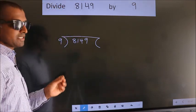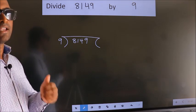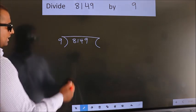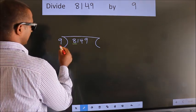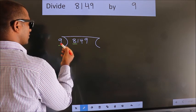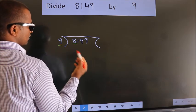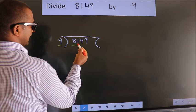This is your step 1. Next, here we have 8, here 9. 8 is smaller than 9, so we should take two numbers: 81.